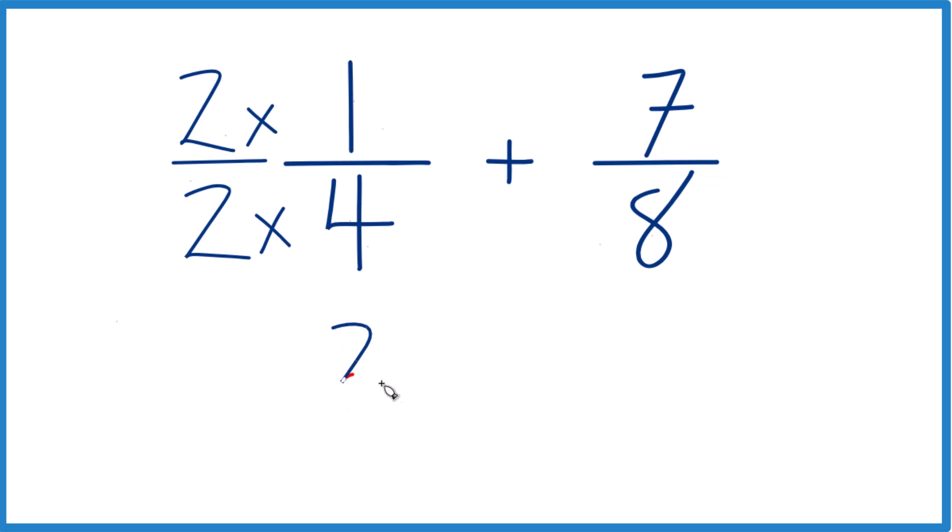2 times 1, that's 2. 2 times 4 is 8, and 2 eighths, that's an equivalent fraction to 1 fourth. They both are equal to 0.25.